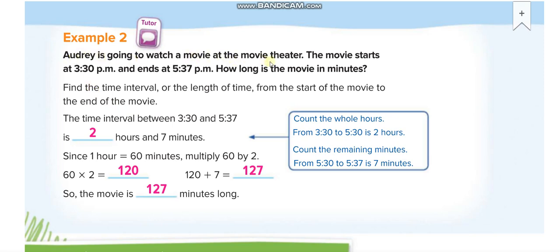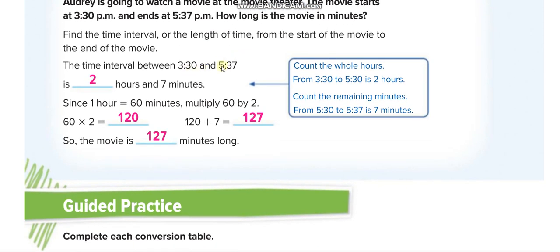We are going to watch a movie. It starts at 3:30 p.m. and ends at 5:37 p.m. How long is the movie in minutes? We subtract the hours and minutes separately: 5 minus 3 equals 2 hours, and 37 minus 30 equals 7 minutes. Then we convert 2 hours into minutes: 2 times 60 equals 120 minutes, and add the 7 minutes to get 127 minutes.